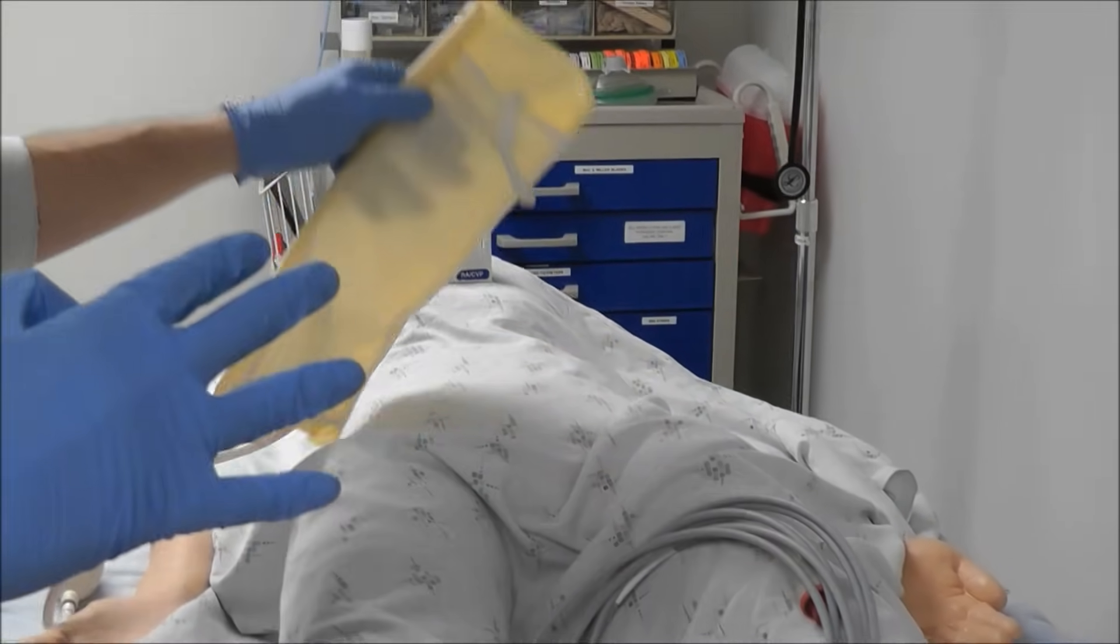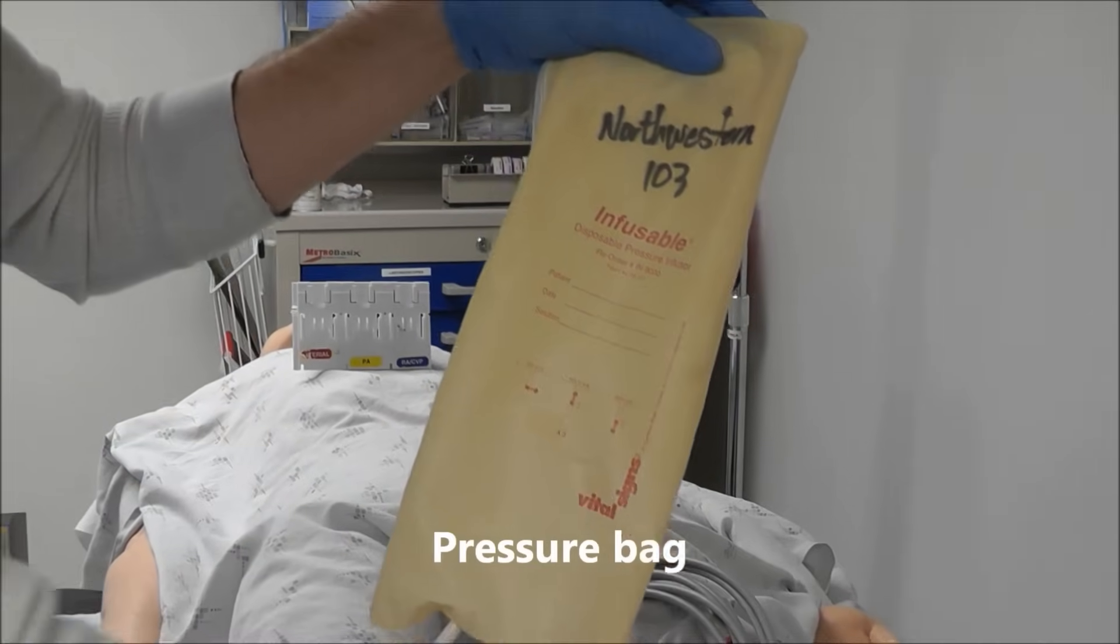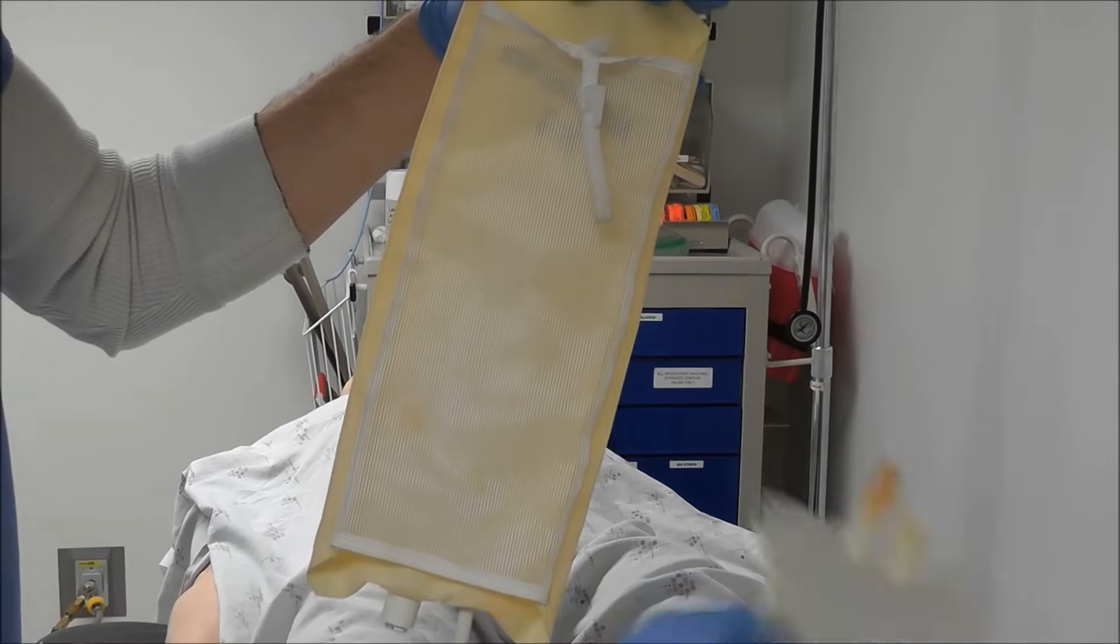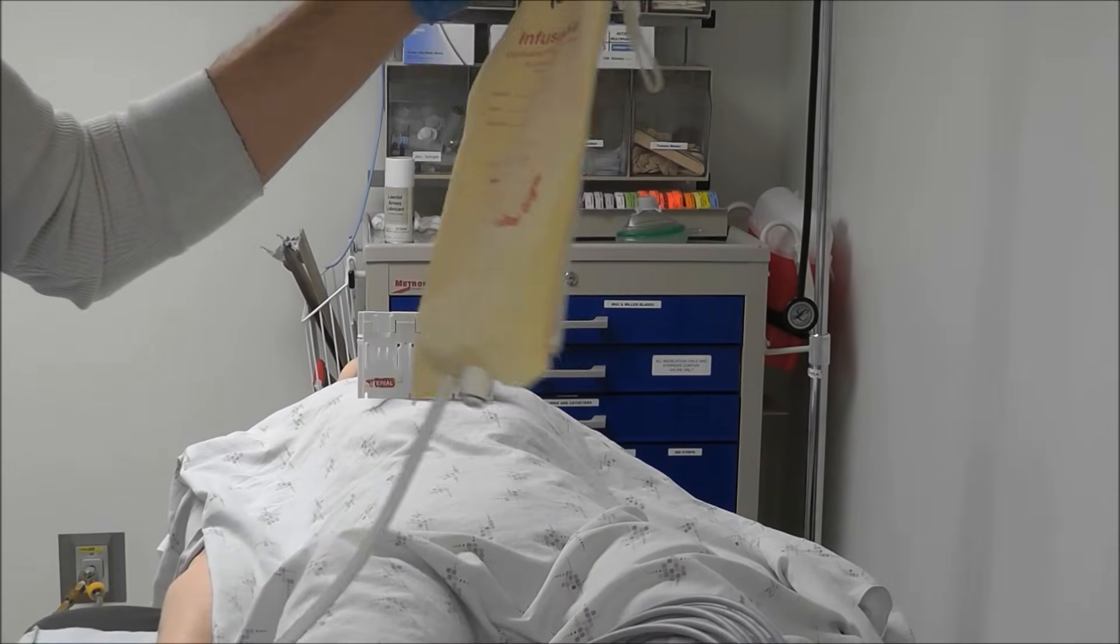The fourth thing that you're going to need is a pressure bag that will be able to pressurize the saline so we can put this system under high pressure so we can flush the tubing.